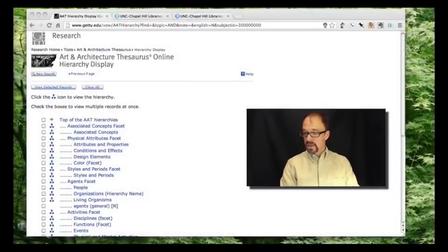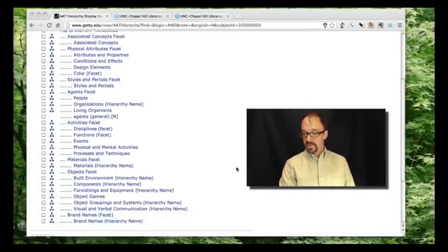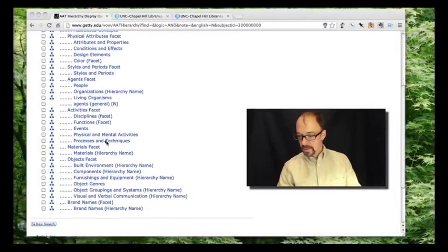And we'll look at the art and architecture thesaurus in some more detail later. And in fact, one of the facets of the art and architecture thesaurus, which is a faceted classification scheme, is materials.